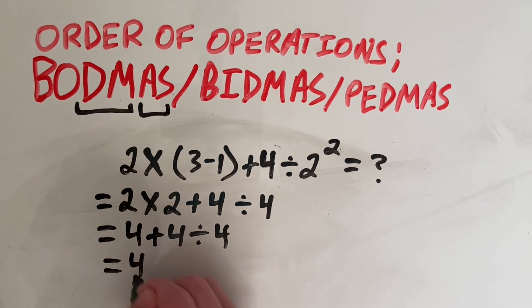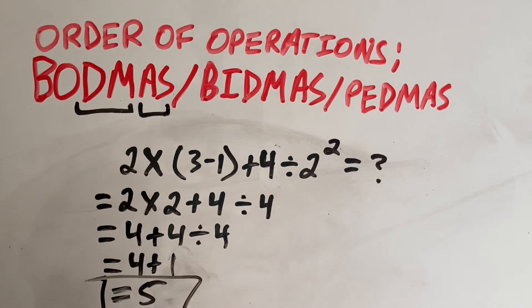And now we can do our division before we do our addition. So we have 4. And then we have 4 divided by 4, which is 1. And that gives us 4 plus 1, giving us an answer of 5.